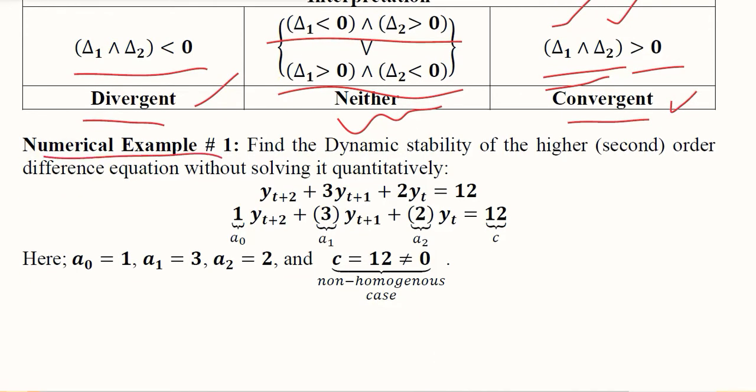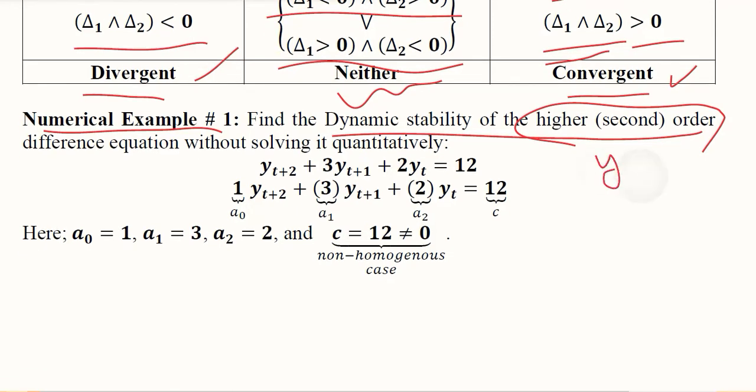Numerical example number one: we want to figure out the dynamic stability for this second order difference equation. We are not resorting to third or fourth order because the determinants will be quite large. We're exemplifying using a second order difference equation, though higher order equations are also solvable using the same method.